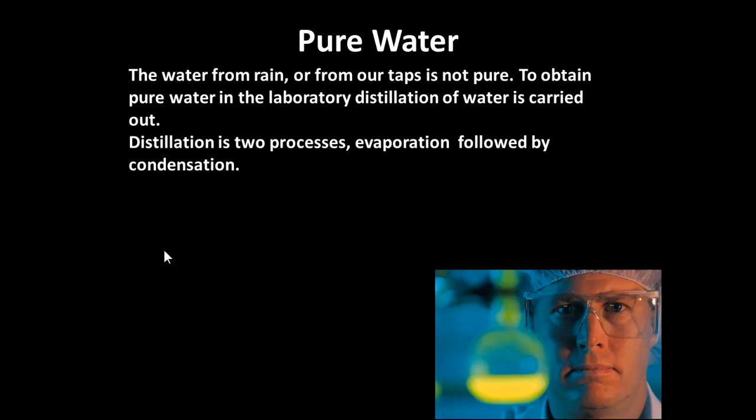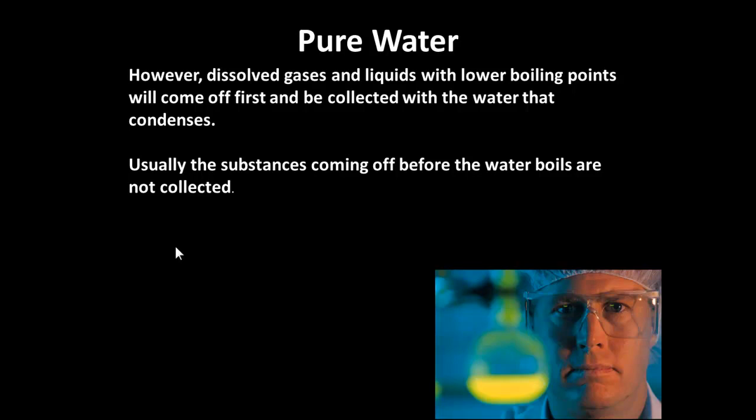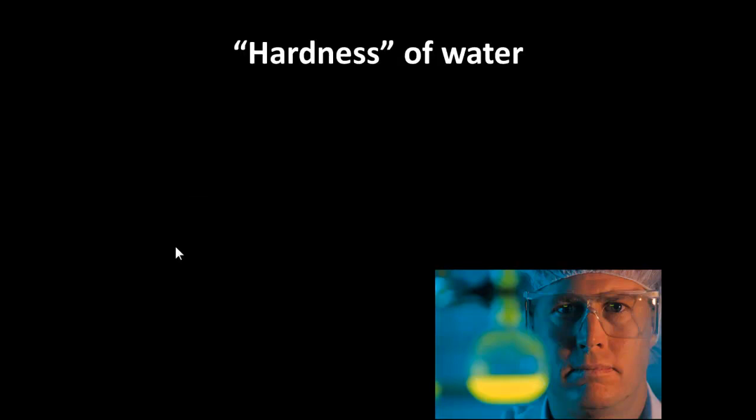With pure water, you get rid of all sorts of impurities. Water from our taps isn't pure, so what we would have to do is distill it, which basically means evaporate the water and then condense the water vapor. Substances that have a higher boiling point would remain behind. You don't collect the substances that come off before the boiling point of water, and then what comes off after that will be pure water.